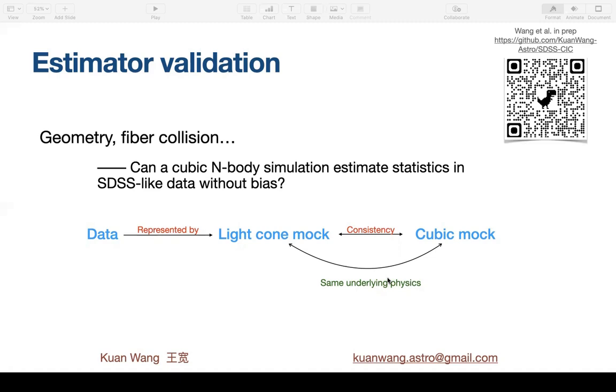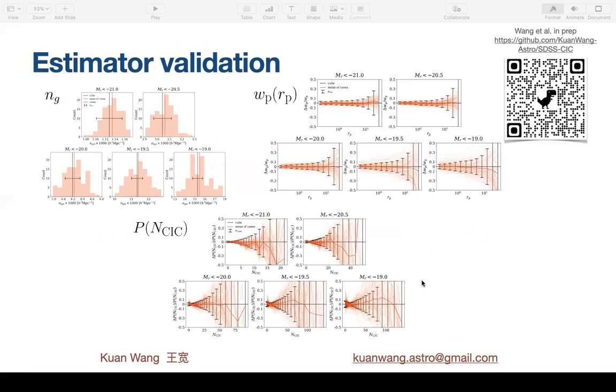So can the simulation cube give unbiased estimates of the data statistics? To verify that, we create mocks. First, we populate the halos in the cubic simulation volume to get a galaxy catalog. And then we use the same galaxy catalog to produce light cone mocks that have the geometry of the data, have fiber collision, redshift uncertainty in it—so all the observational effects that are present in data. But they also have the same underlying physics as the cubic mock. So if our measurements of the statistics from the cubic mock and from the light cone mocks are consistent within error, that means the cube mock can give unbiased estimates of the light cone mocks statistics and hence the data.